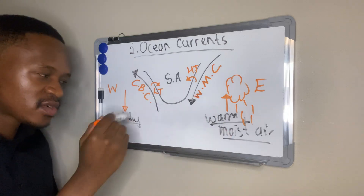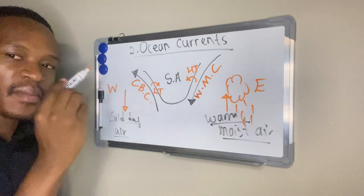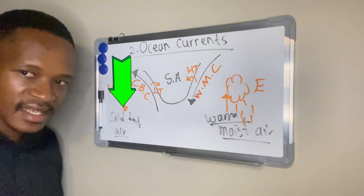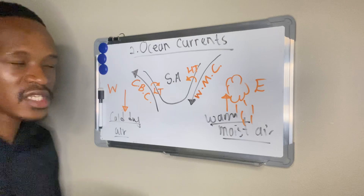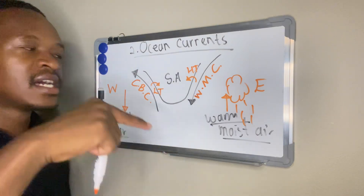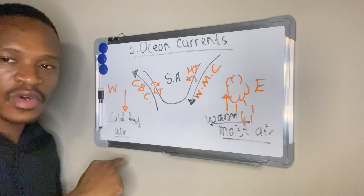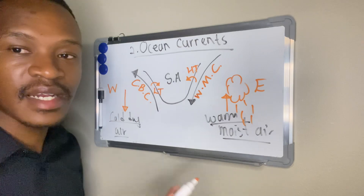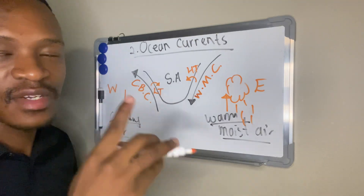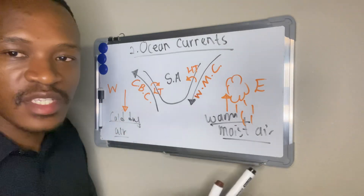On the west coast, we have cold, dry air from the cold Benguela current. Cold, dry air sinks, which means there will be less cloud formation and therefore less rainfall on the west coast. But on the east coast, the warm Mozambique current brings warm, moist air which rises, cools, and condenses to form clouds, bringing more rainfall on the east coast.